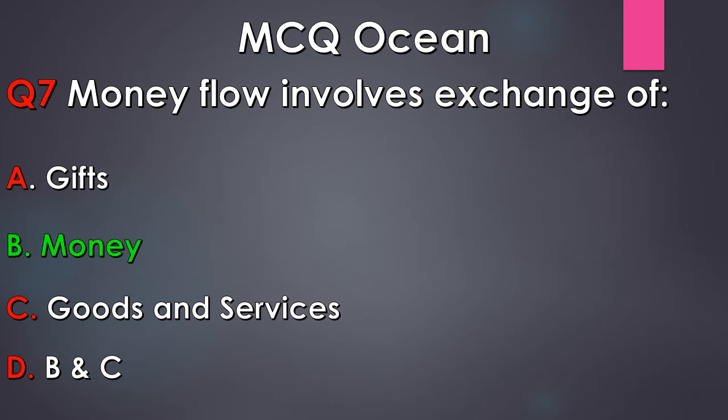The correct answer is Option B, Money. Money flow involves exchange of money, as money flow refers to the flow of factor payment from firms to households and correspondingly the flow of consumption expenditure from households to firms.